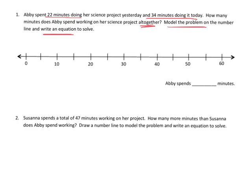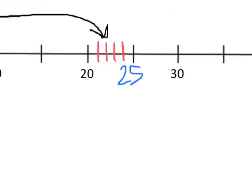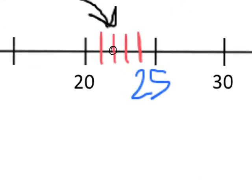First she spent 22 minutes doing her science project yesterday. So where does 22 go? Well, we know it's going to be between the 20 and the 30, and this is 25. So we need to mark off one, two, three, four tick marks to give us five minutes. 22 means we're going to start at zero and go to 20 plus two extra minutes. I'm going to zoom in here and label 22 right there.